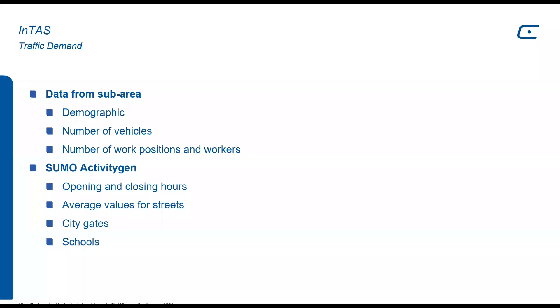Then we applied the SUMO activity gen. Together with the previous information, we added opening and closing hours from the companies around the city. We used average values for streets. Here, I mean the average values for work positions and population, so every edge or street in a sub-area has the same value. The city gates is the point where we consider the traffic from incoming or outgoing traffic from the villages, but also from surrounding cities. We also considered the schools as kindergartens, high schools, and universities with their number of students and opening and closing hours.